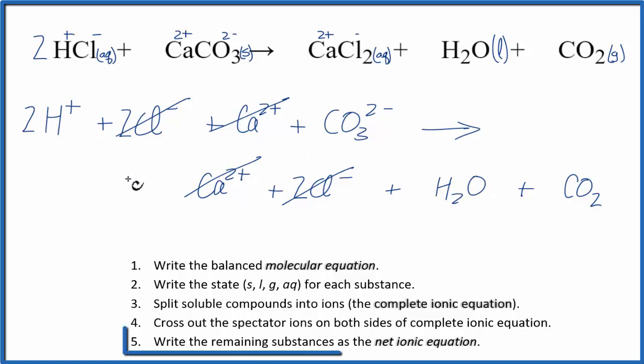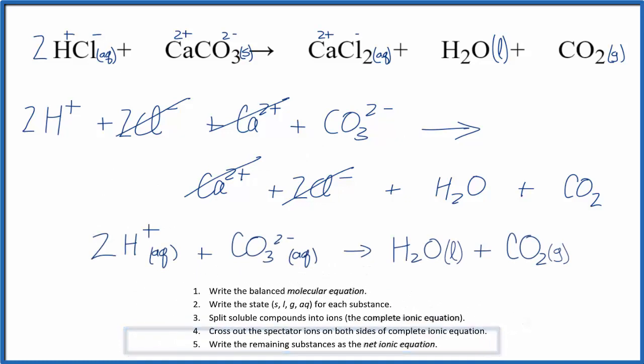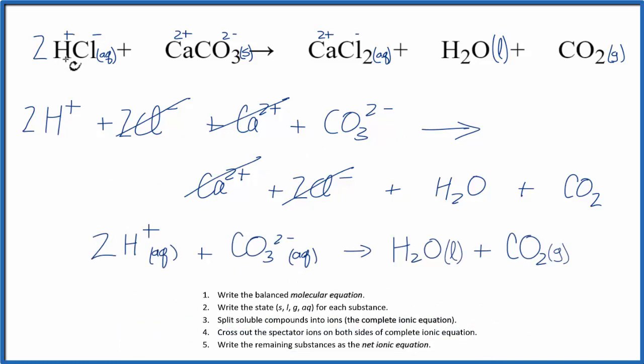From there, we can write the net ionic equation. And that looks like this. So that's the net ionic equation for HCl plus CaCO3, hydrochloric acid and calcium carbonate.